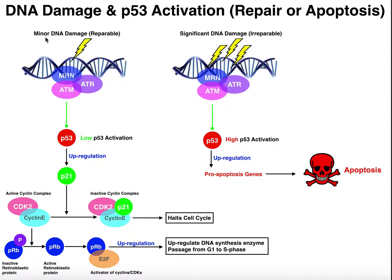In the case of minor DNA damage, we're going to see that the DNA is actually reparable. In the case of significant DNA damage, it may be irreparable, meaning that rather than attempt to repair the DNA and risk mutations being propagated into future cell generations, the cell would rather commit suicide or apoptosis to prevent those mutations from being propagated into later cell generations.